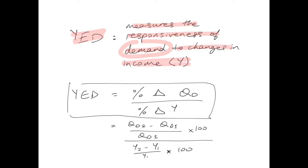It is calculated using this formula: YED equals percentage change in quantity demanded divided by percentage change in income. So it's the new quantity demanded QD2 minus the old quantity demanded QD1, divided by QD1 times 100, all divided by Y2 minus Y1 divided by Y1 times 100. This should give you the value of YED.